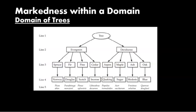Another way of showing markedness within a domain is with a chart that places the more unmarked terms at the top and the more marked terms at the bottom. In the domain of trees, there are trees with broad leaves, needles, or fronds, as well as fruit trees, flowering trees, trees with different bark colors, and those with medicinal properties. As you read the chart from top to bottom, the terms become more marked — the most marked term is the scientific name, which refers to only one species or subspecies.